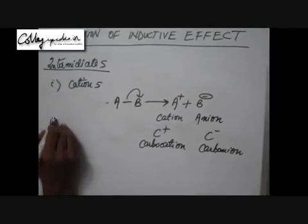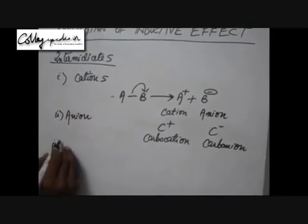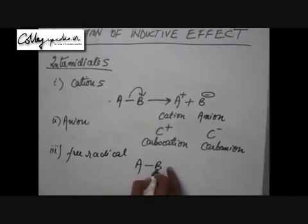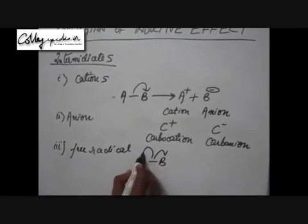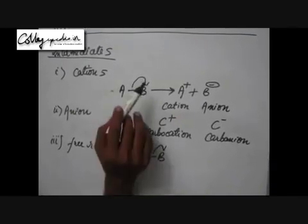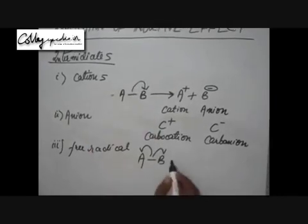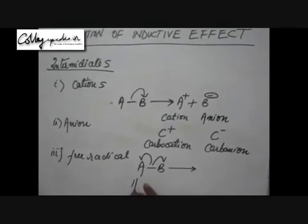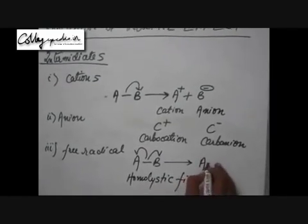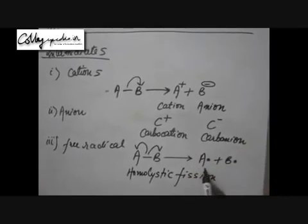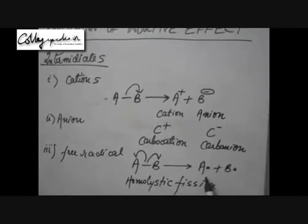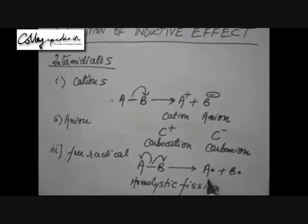There is one more intermediate that we will frequently deal with — the free radical. Suppose the bond between A and B is broken homolytically, meaning while breaking the bond we give one electron to each atom. We use a single-headed arrow for the movement of one electron, whereas a double-headed arrow refers to the movement of two electrons. After homolytic fission, A will have one electron and B will have one electron. Species which have one unpaired electron are called free radicals — they are called 'free' because they are very active and available for reactions.